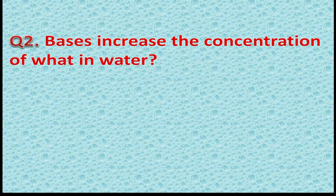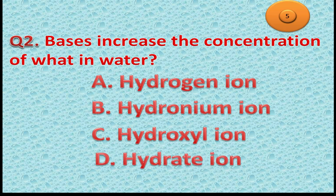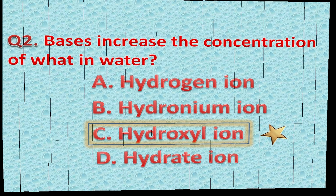Question 2: Bases increase the concentration of what in water? Option A: Hydrogen ion. Option B: Hydronium ion. Option C: Hydroxyl ion. You will get 5 seconds. The correct answer is Option C — Hydroxyl ion. You got 1 star if you gave the correct answer.